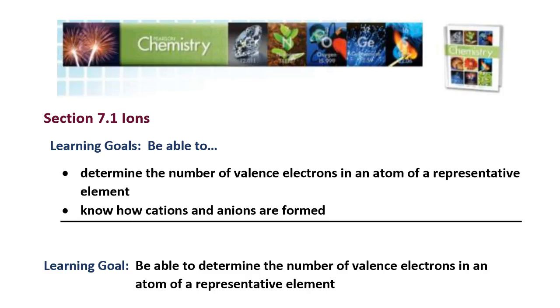This video is for section 7.1 about ions. The learning goals are to be able to determine the number of valence electrons in an atom of any representative element and know how cations and anions are formed.